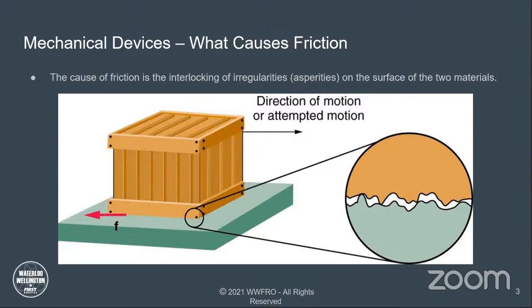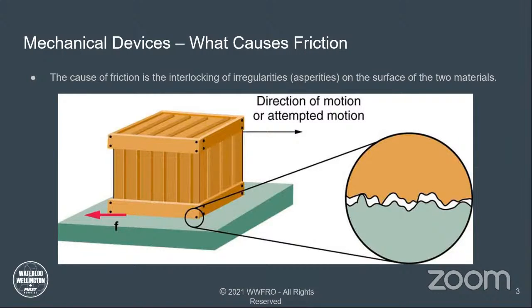The cause of friction is the interlocking of irregularities, also called asperities, on the surface of two materials. If you take a microscopic look at two surfaces — this box on concrete — you'll see that both surfaces have peaks and valleys of surface roughness. These peaks interlock into the valleys, and as you overcome friction, they scrape across each other, leaving material from each surface on the other.